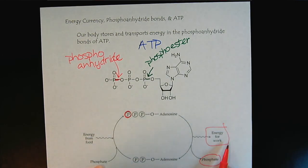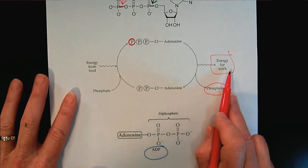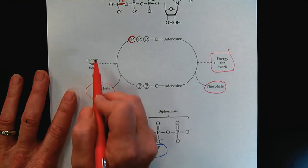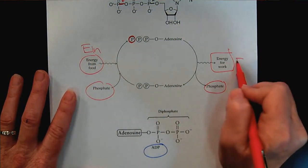So as we lose the phosphate group, energy is released that we can use for work. And then when we put the phosphate back on, energy has to come in. So energy in and energy out.